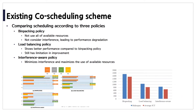The overall workload execution time and average job completion time according to each policy are shown in the figure on the right. The bin packing method considers only max memory and does not use all available resources. Furthermore, it does not reflect interference among applications, leading to performance degradation. Load balancing reduces interference naively and shows better performance than bin packing, but still has limitations. The interference-aware policy minimizes inter-application interference and maximizes the use of available resources. Based on this motivation, we refine and expand the interference-aware scheduler.